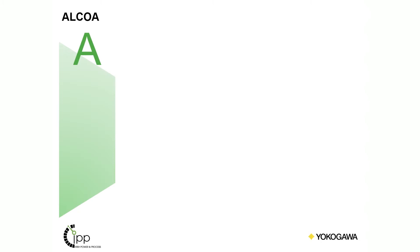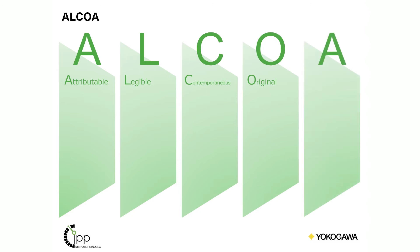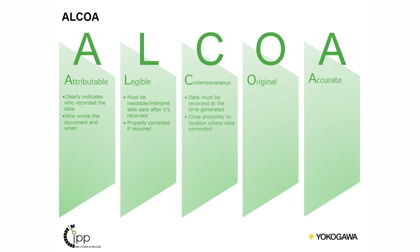ALCOA stands for Attributable, Legible, Contemporaneous, Original and Accurate. Attributable means that the data must clearly indicate who recorded it, who wrote the document and when. Legible means the data must be readable after it's recorded. Contemporaneous means that the data must be recorded at the time it was generated, and date and time stamps must come in the order of execution. Original means that the data must be stored in an unaltered state. And accurate means data must reflect the action or observation made, that checks are made where necessary and modifications can be explained.